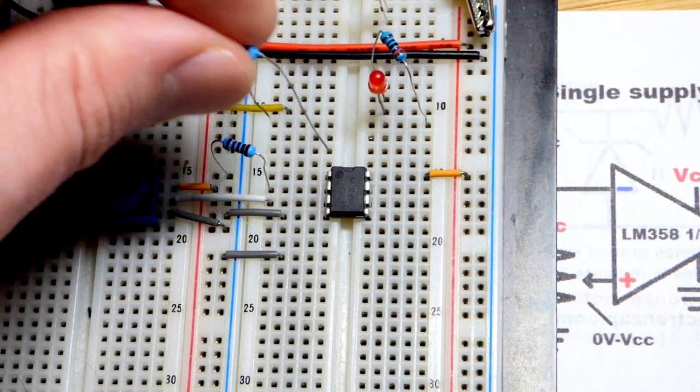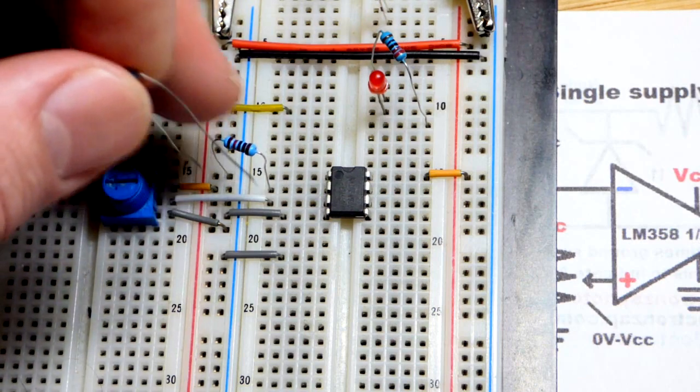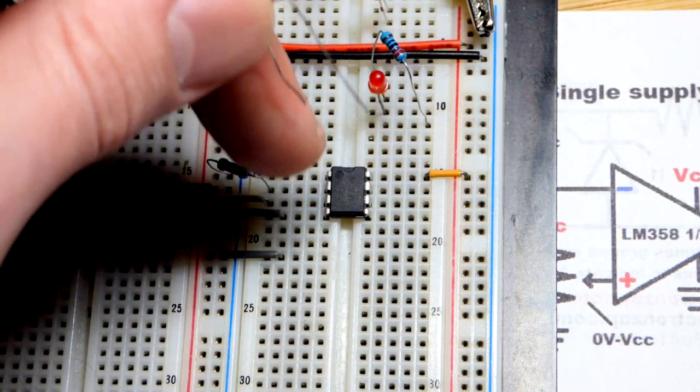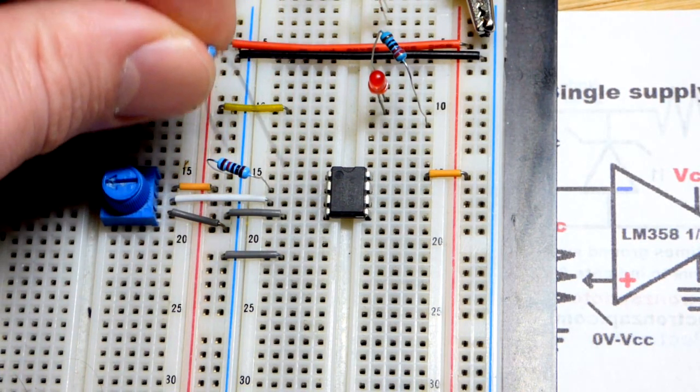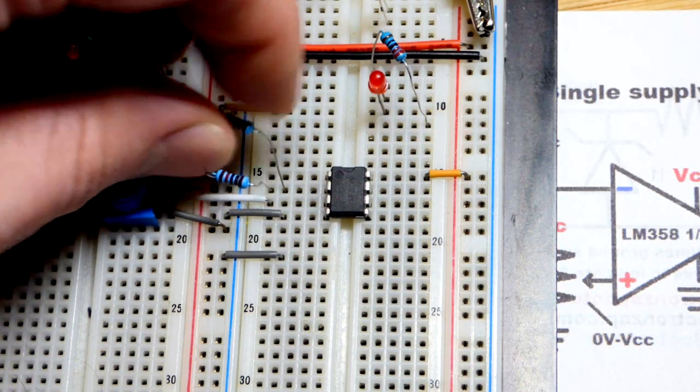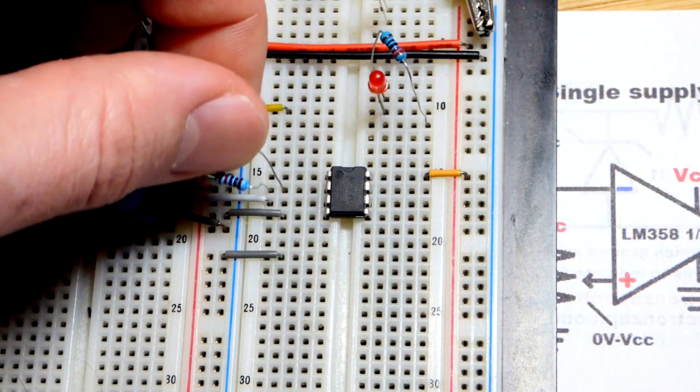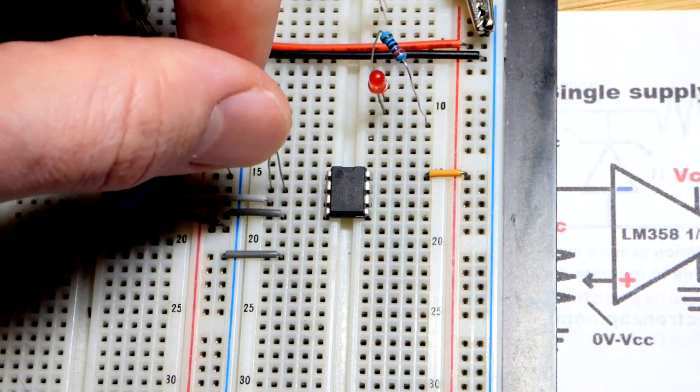So 100k ohm resistors would let through one tenth of the current that these do from positive rail to negative rail. But still, this is pretty low. So no big deal. And I'm keeping a lot of space here. We'll see why. But they're going to the inverting input.